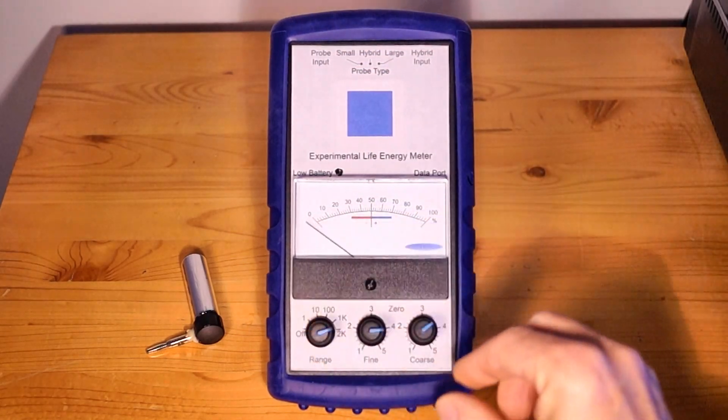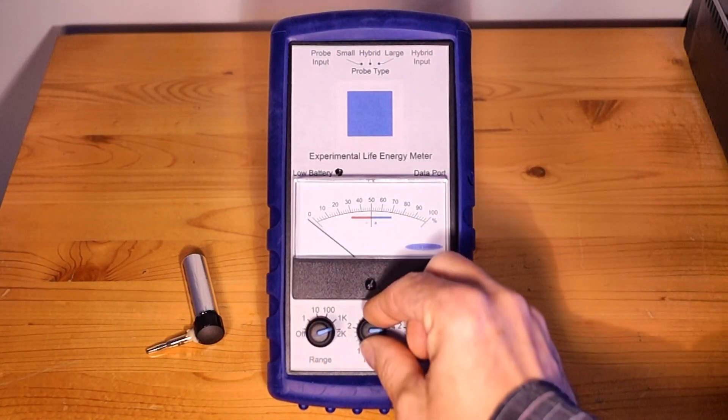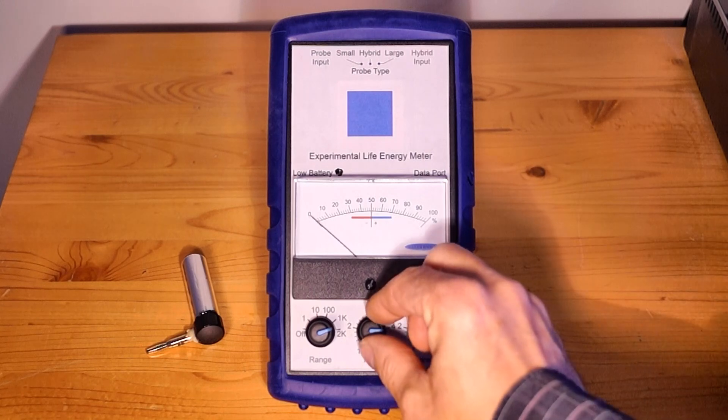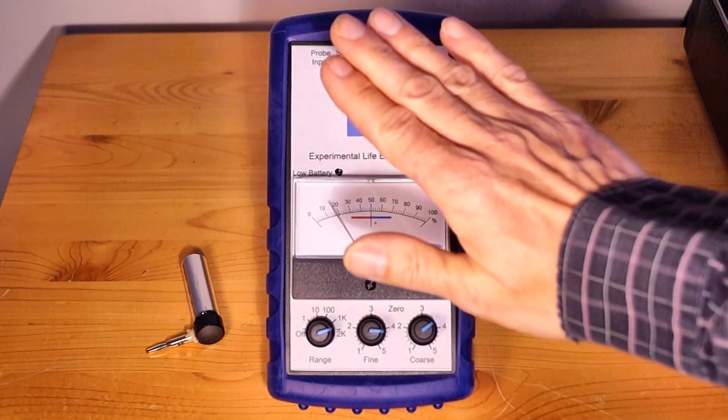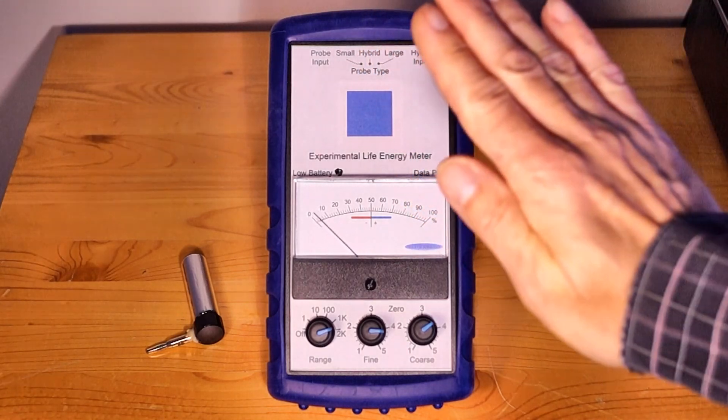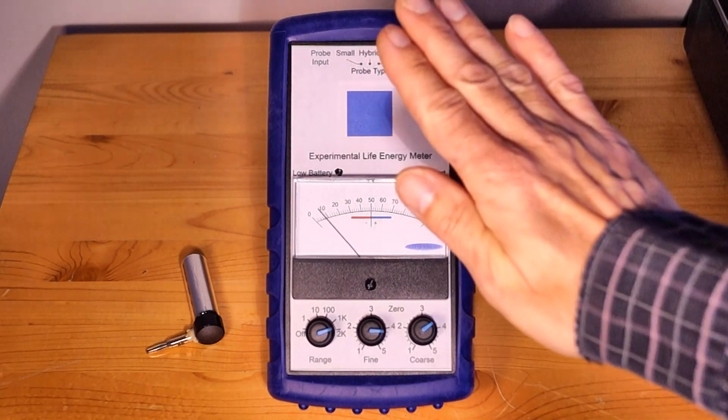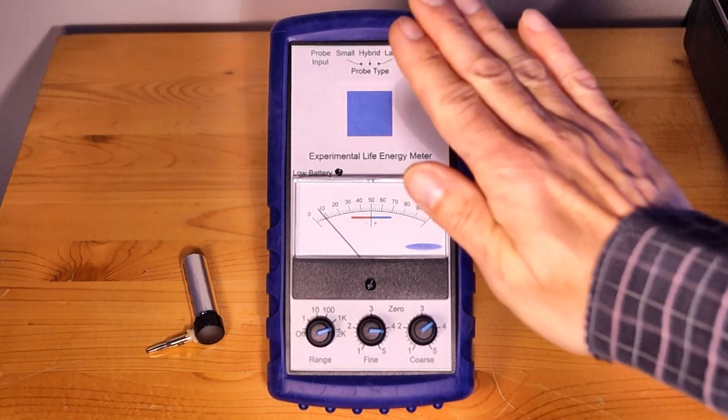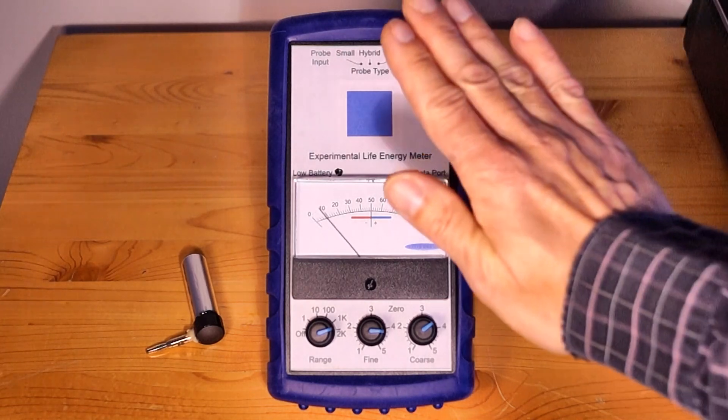Finally the two thousand range, the most sensitive range on the meter. If we now approach the meter from a considerable distance, we can measure the influence of the hand from over a foot away, over 30 centimeters.